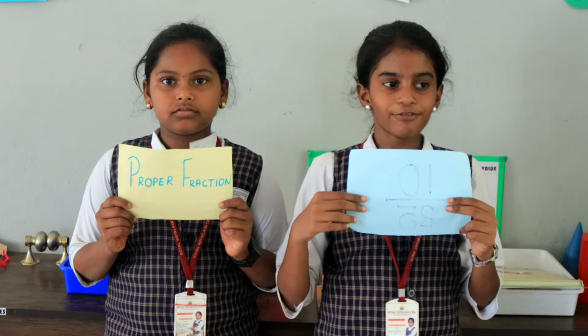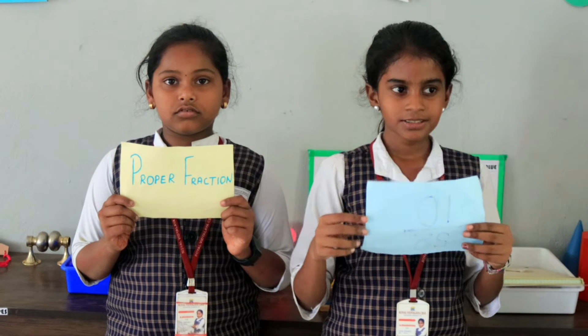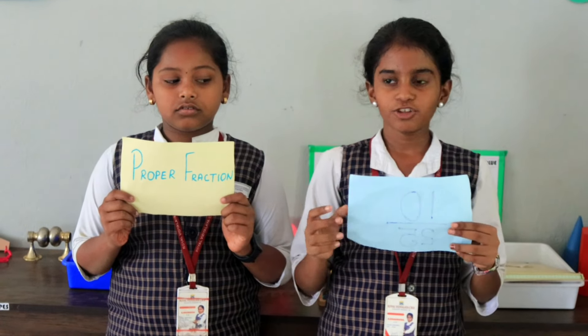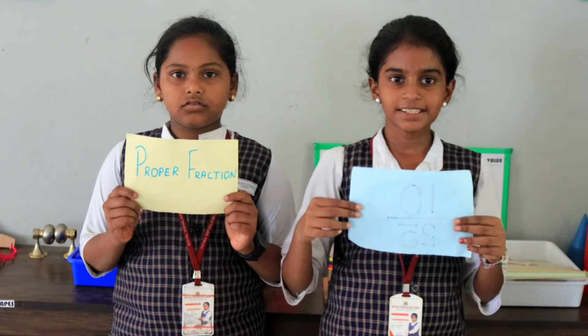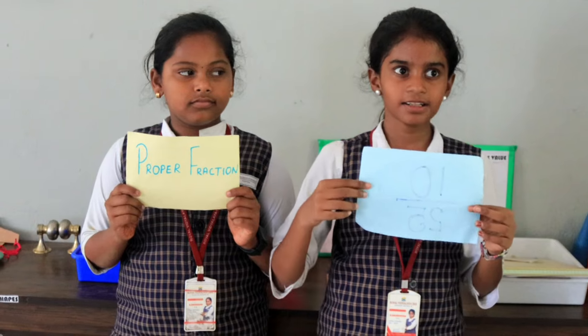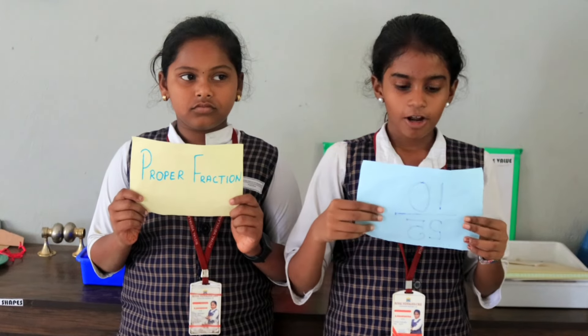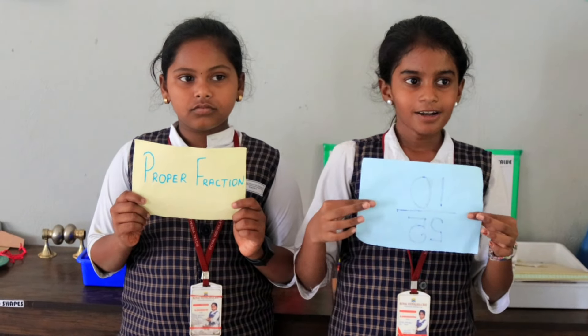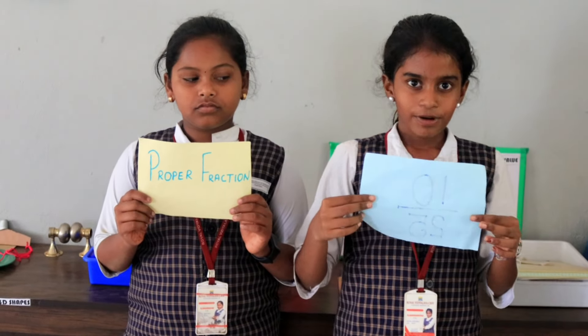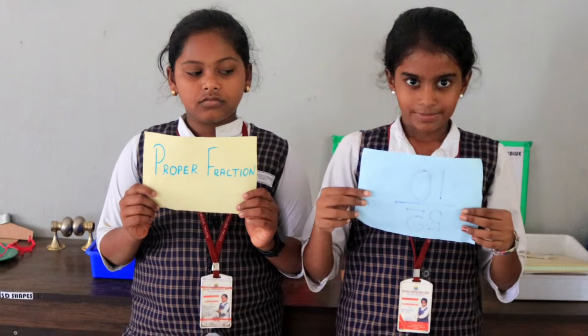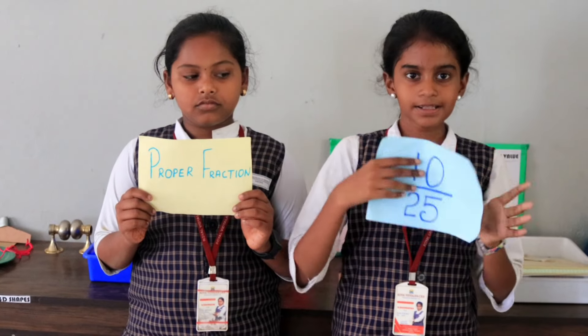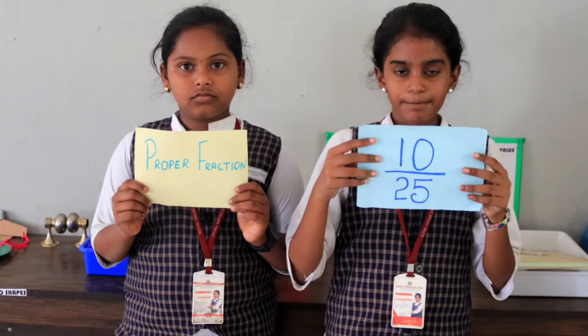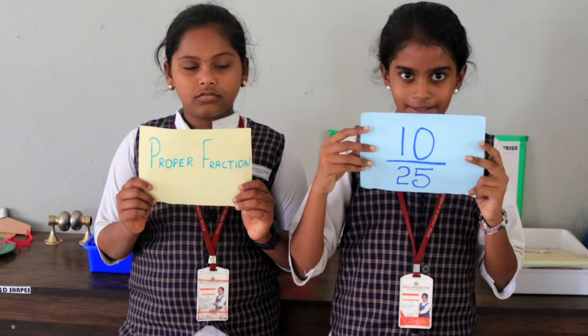Proper fraction: in a fraction, if the numerator is less than the denominator, it is called a proper fraction. Example: 10 by 25.